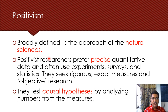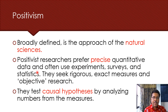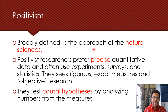Positivism is one very important strand of research. It is the approach of the natural sciences — physics, chemistry, biology. In positivist social science, we prefer precise quantitative data from experiments and surveys, and we use statistics to make sense of that data. We seek rigorous, exact measures — this is what is known as objective research. Positivist researchers try to replicate the approach of the natural sciences. There may also be causal hypotheses — what causes what — which we find out by analyzing numbers from the measures.